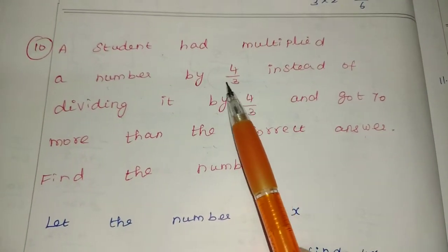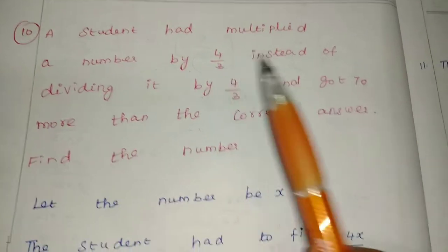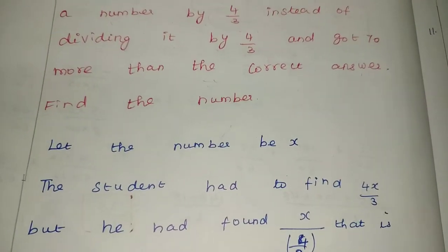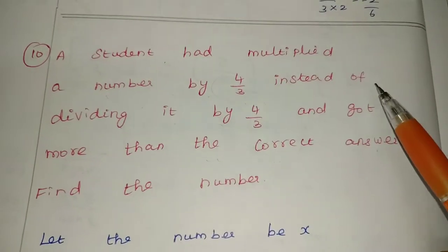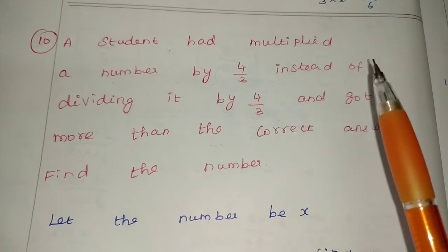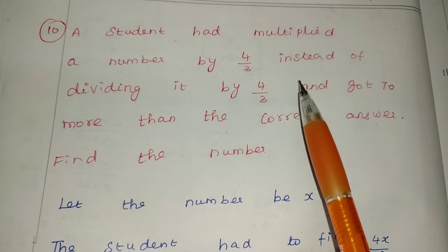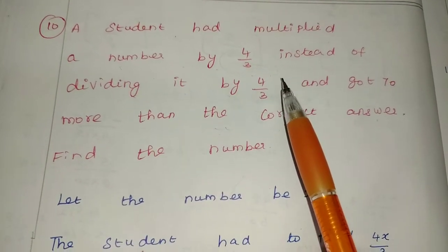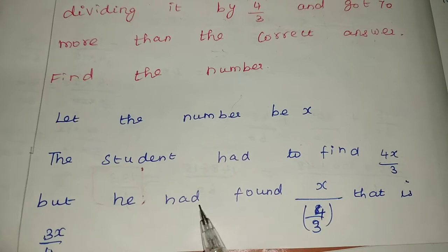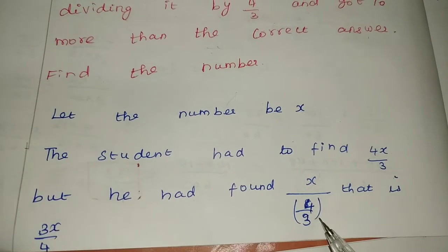The student multiplied the number by 4/3, so that gives 4x/3. Next, instead of dividing by 4/3, the student should have divided x by 4/3, which gives x divided by 4/3.